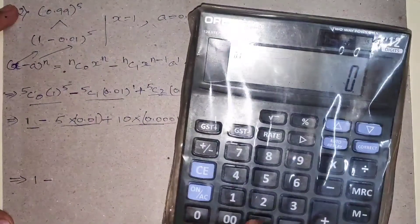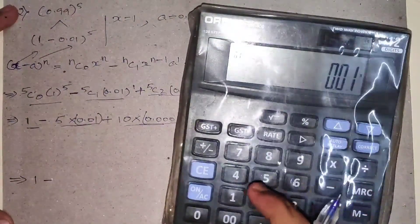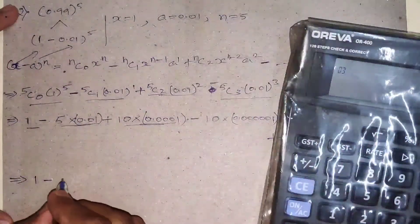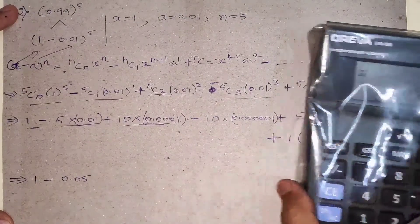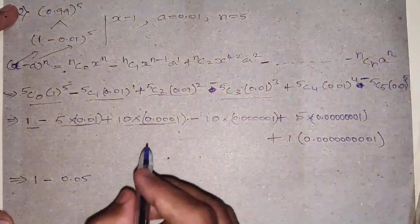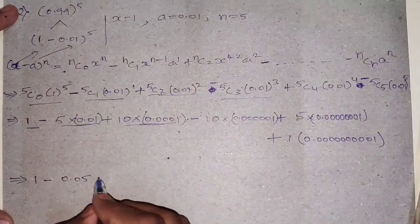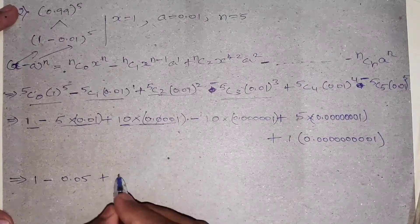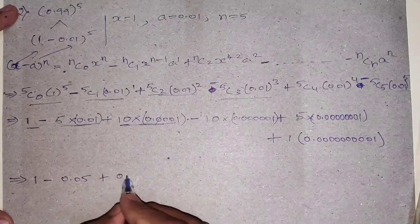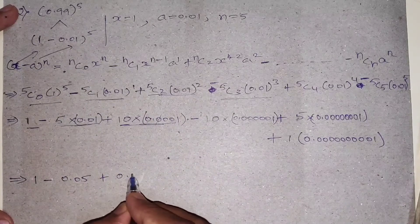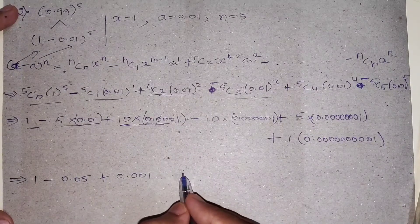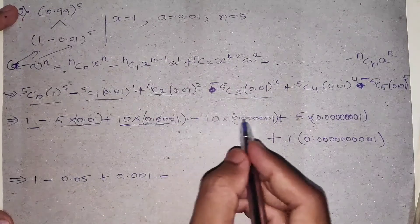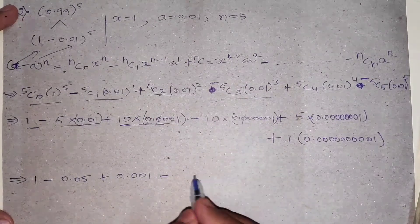And 5C5 equals 1 times 0.01 to the power of 5 equals 0.0000000001. Now with the minus sign applied every other term, multiply and cancel zeros accordingly. So 10 times the term — cancel one zero — gives 0.001.